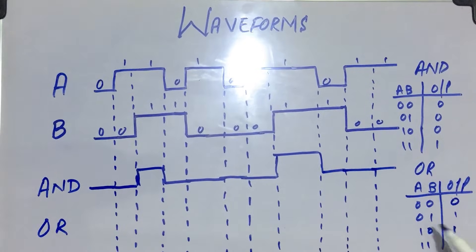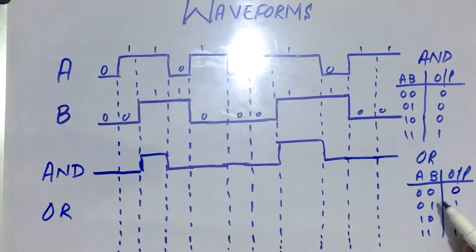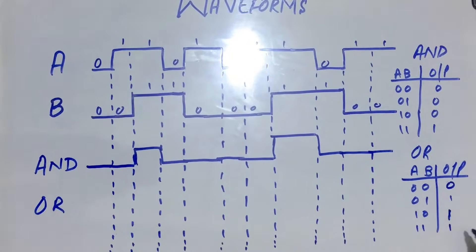For the OR gate, 0 and 0 gives 0, and all others will give 1. When we have at least one 1, the output will be 1.